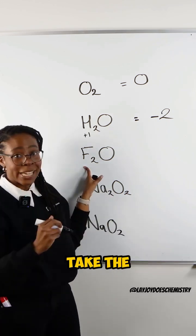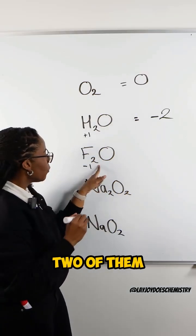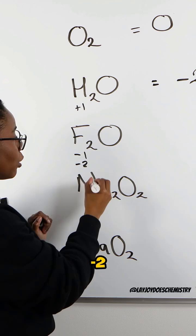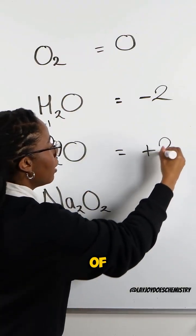In F2O, fluorine is going to take the minus one oxidation state. Now, because there are two of them, that's contributing minus two, meaning that the oxygen must have an oxidation state of plus two.